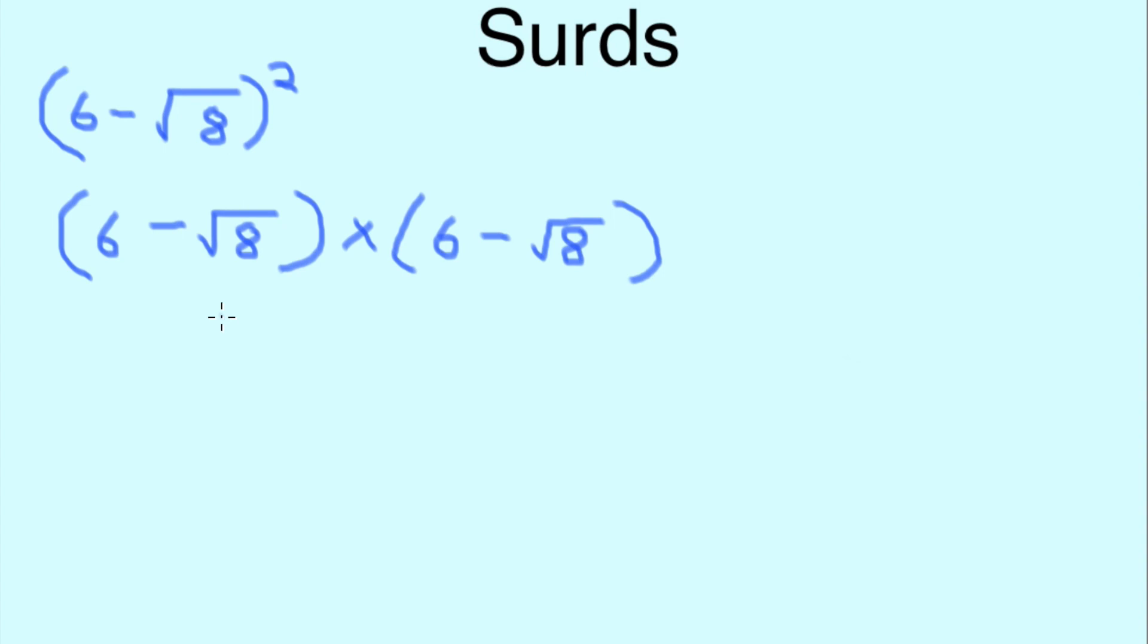Finally, we might be asked a question involving brackets, such as (6 - √8)². To simplify this, we simply multiply out the brackets. So (6 - √8)² becomes (6 - √8) times (6 - √8). 6 times 6 gives us 36.